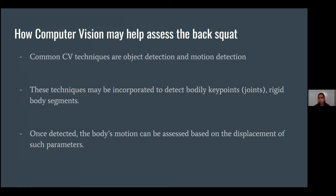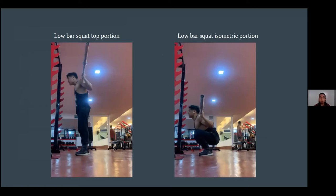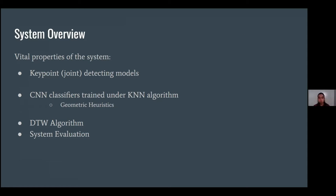These techniques may be incorporated to detect bodily keypoints like joints and rigid body segments. Once detected, the body's motion can be assessed based on the displacement of such parameters. In the next slide we can see our model, Lance Briones, showing the correct form of how to back squat. In the system overview, these are the vital properties of the system.